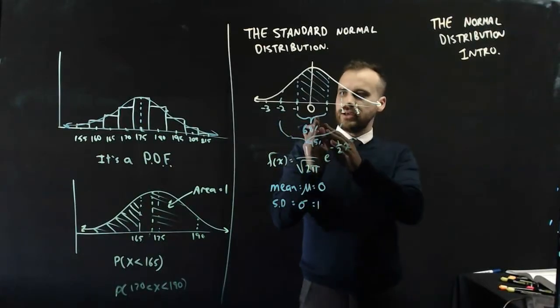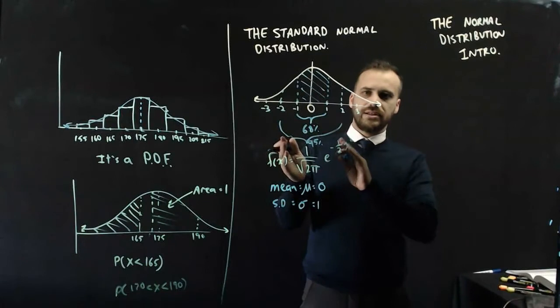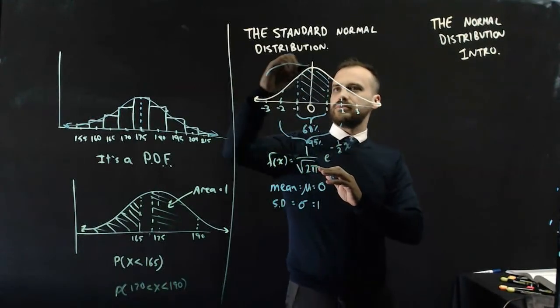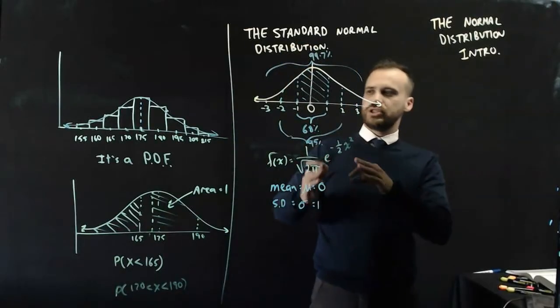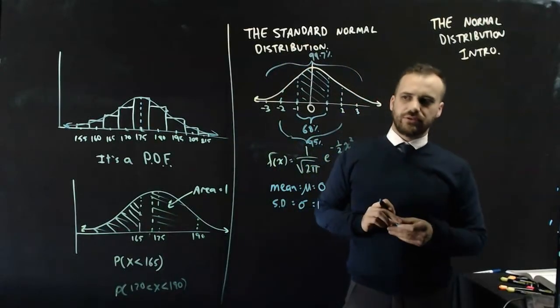And finally, between negative 3 and 3 standard deviations, you'll get 99.7% of the population falling between negative 3 and 3.